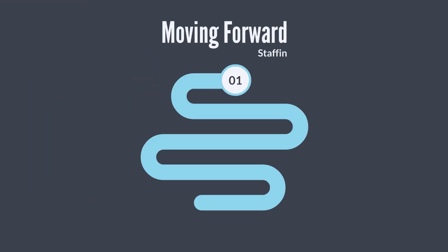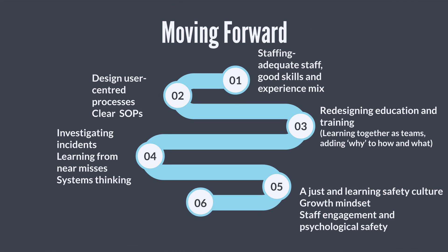To move forward we need all of these steps: adequate staffing with good skills and experience mix; user-centred processes and clear SOPs; redesigning education and training; investigating incidents, learning from near misses and systems thinking; and an adjusting and learning safety culture with growth mindset, staff engagement, and psychological safety. Above all, shared learning is required.